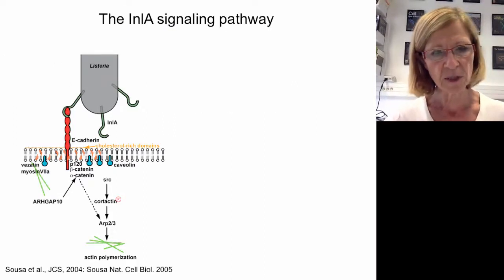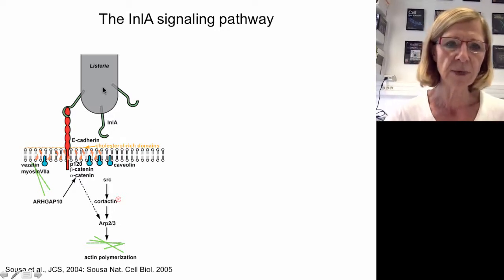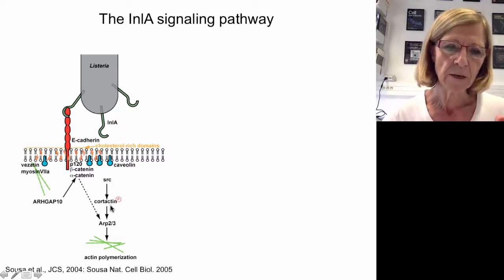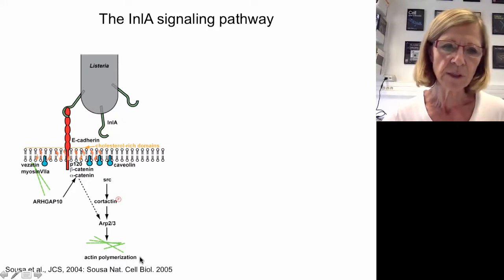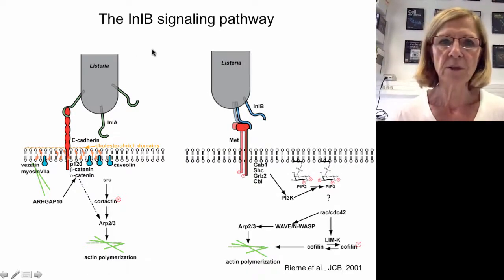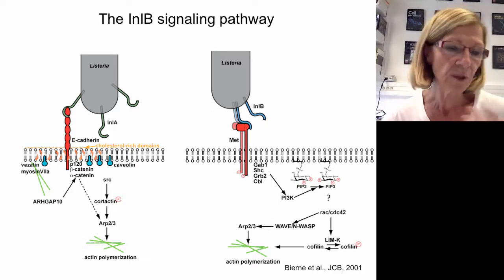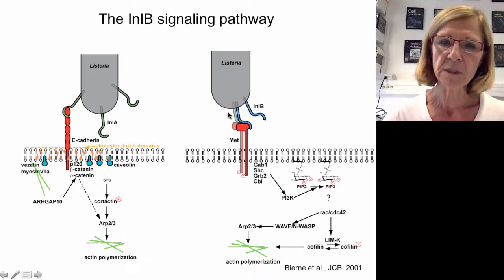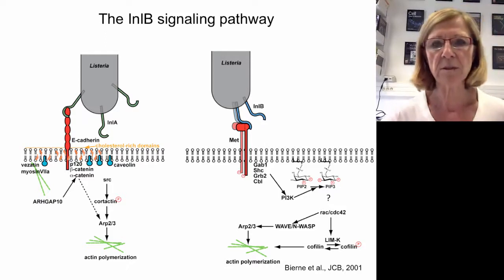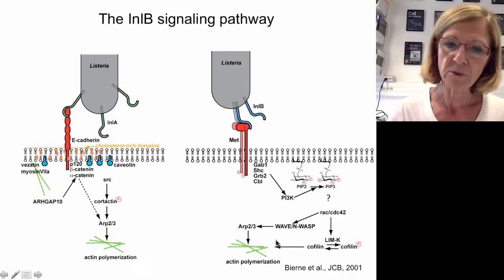We have been interested to decipher all the signaling pathways involved in the entry process. In cells where E-cadherin is present, internalin interacts with E-cadherin and induces a signaling pathway leading to actin polymerization, with key proteins such as the Arp2/3 complex. The Arp2/3 complex is also involved in Listeria entry via InlB. In cells where E-cadherin is not present, InlB interacts with MET — an ubiquitous protein and receptor for hepatocyte growth factor — generating a signaling cascade leading to actin polymerization. Another critical factor is PI3 kinase, activated via different proteins including the Cbl ubiquitin ligase.